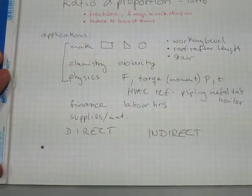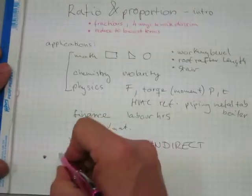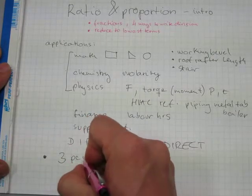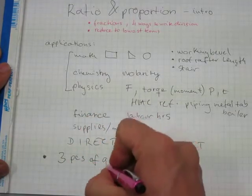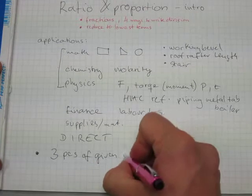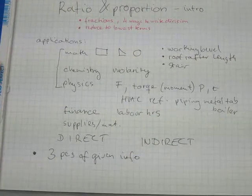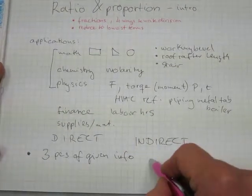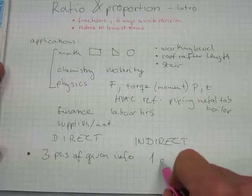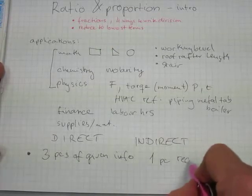For all ratio and proportion calculations, direct or indirect, you have to have three pieces of given information. With three pieces of given information, you can find one piece of requested information. That's for all ratio and proportion operations.